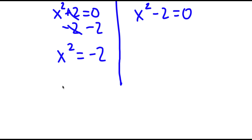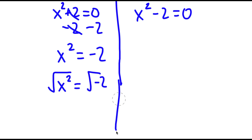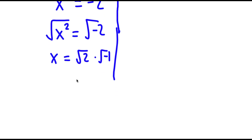To solve this, I'm going to take the square root on both sides. The square root of x squared is x, and the square root of negative 2 is the square root of 2 times the square root of negative 1. The square root of negative 1 is equal to i. So I have x is equal to positive or negative square root of 2i.